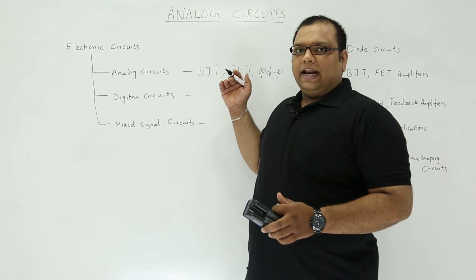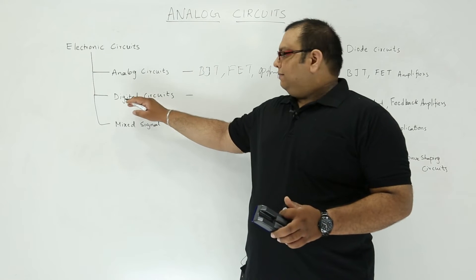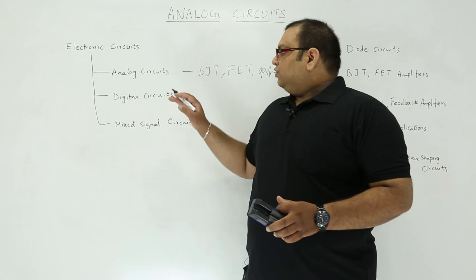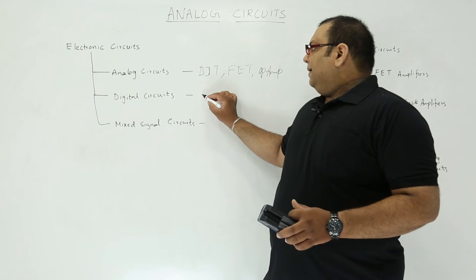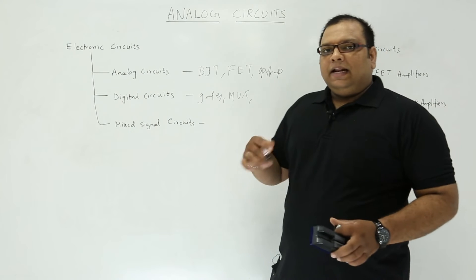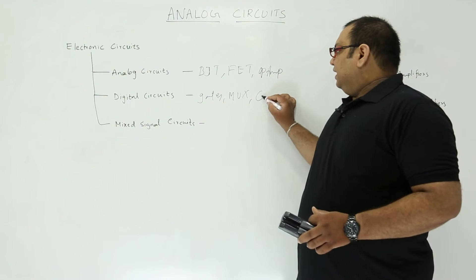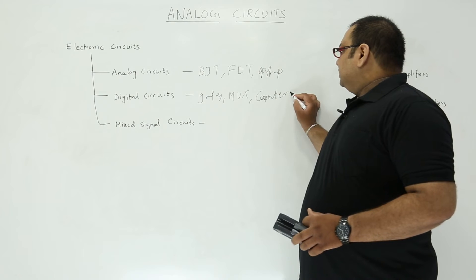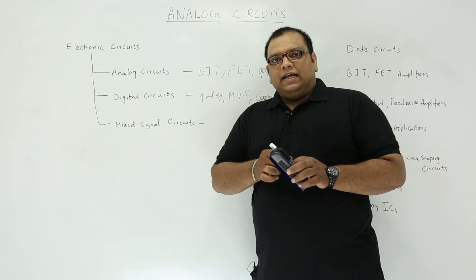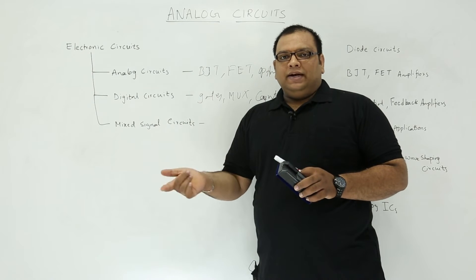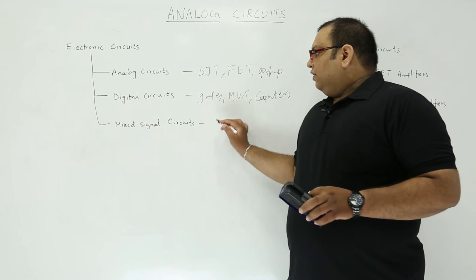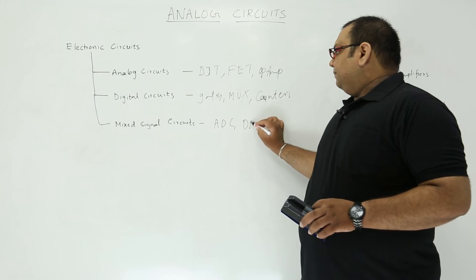In digital circuits, the input is digital and the output is also in digital format. Digital circuits include basic gates, multiplexers, counters, registers, and microprocessors. In mixed signal circuits, the input may be analog and output digital, or input digital and output analog. Mixed signal devices include ADCs and DACs.